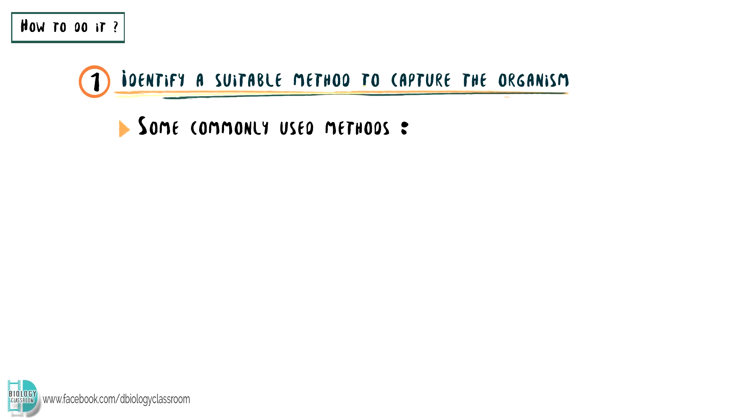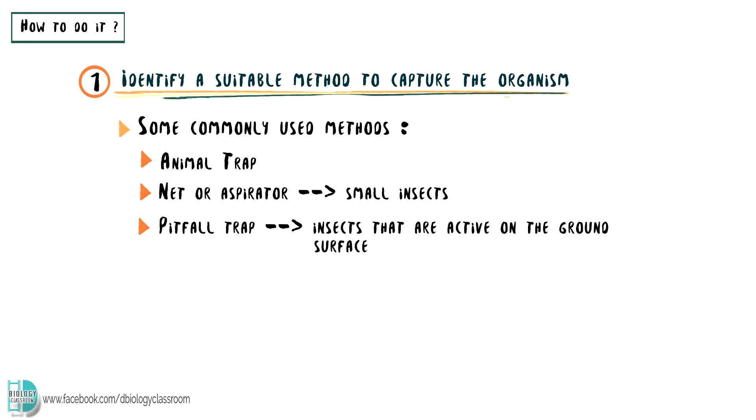Now let's go through the steps of this sampling method. First of all, we need to identify a suitable method to capture a number of individuals in a natural population. Some commonly used methods include animal traps, nets or aspirators for small insects, and pitfall traps for insects that are active on the ground surface.